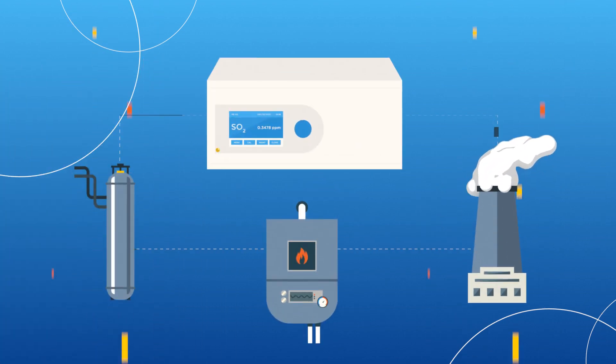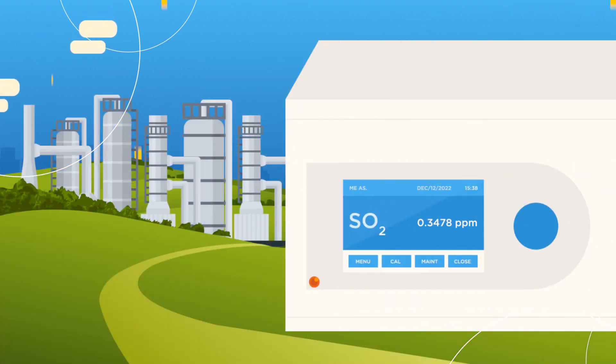Sulfur dioxide analyzers use ultraviolet absorption technology for detecting concentrations of these gases in heater or boiler flue gas and process gas streams. This helps control sulfur dioxide release to keep them from harming plants and animals through its acidifying effect on the environment.